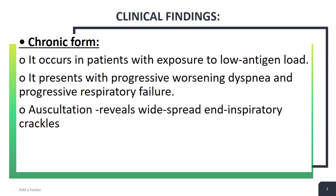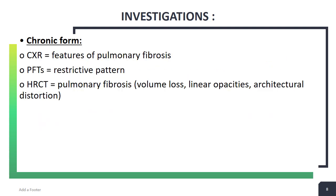The chronic form occurs in patients with exposure to a low antigen load. It presents with progressive worsening dyspnea and progressive respiratory failure. Auscultation reveals widespread inspiratory crackles like velcro. Pulmonary function tests show a restrictive pattern — the FEV1 to FVC ratio is affected due to a decrease in forced vital capacity, and the diffusion lung capacity of carbon monoxide (DLCO) is also decreased.